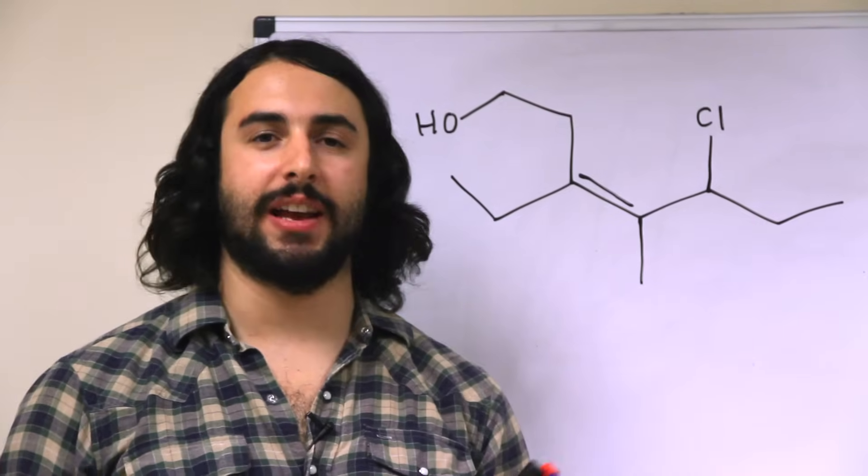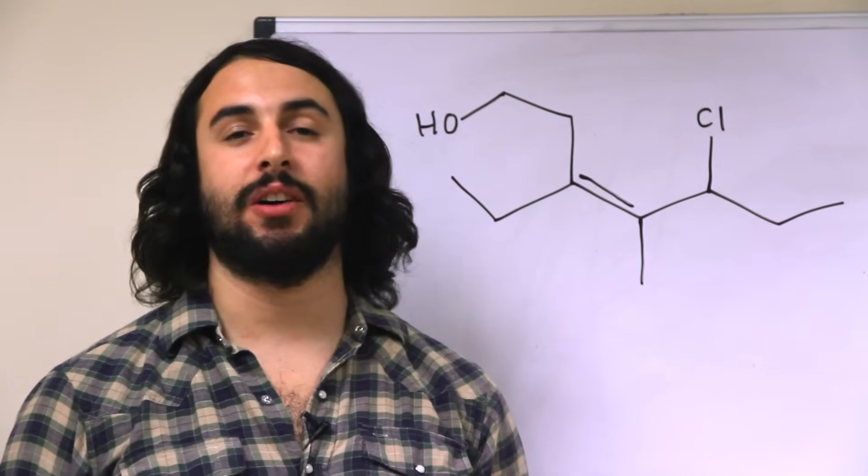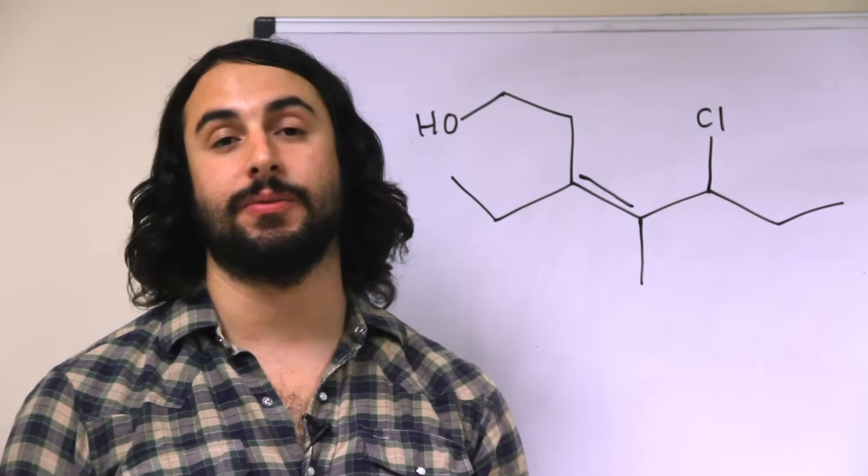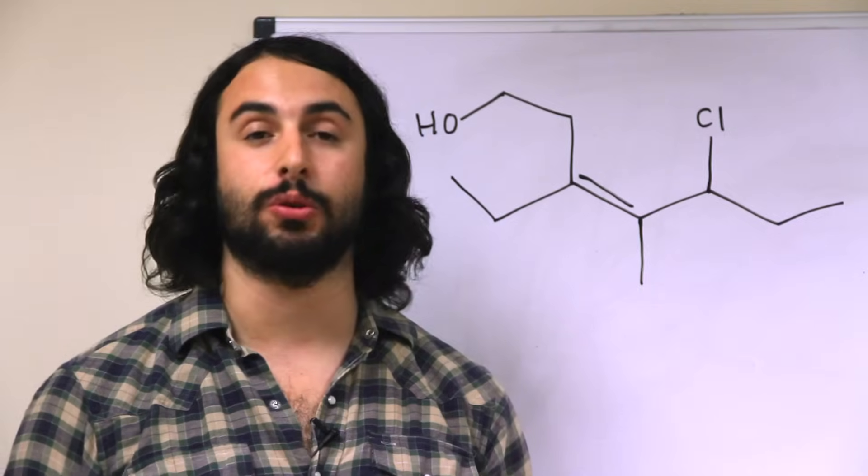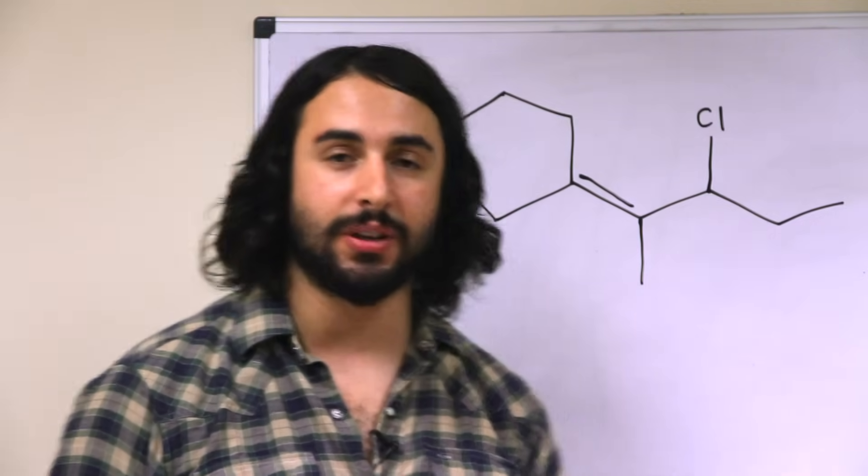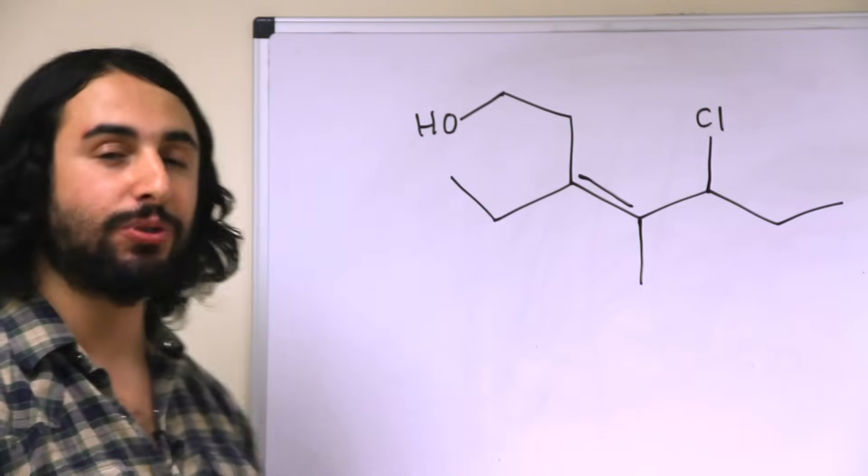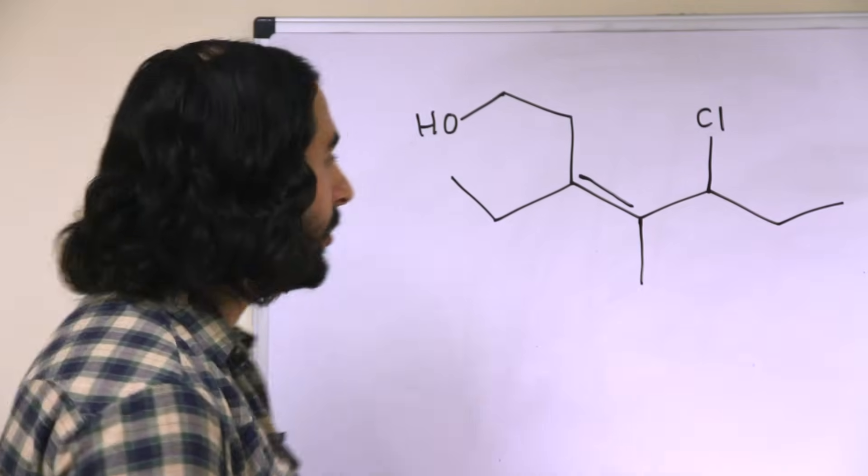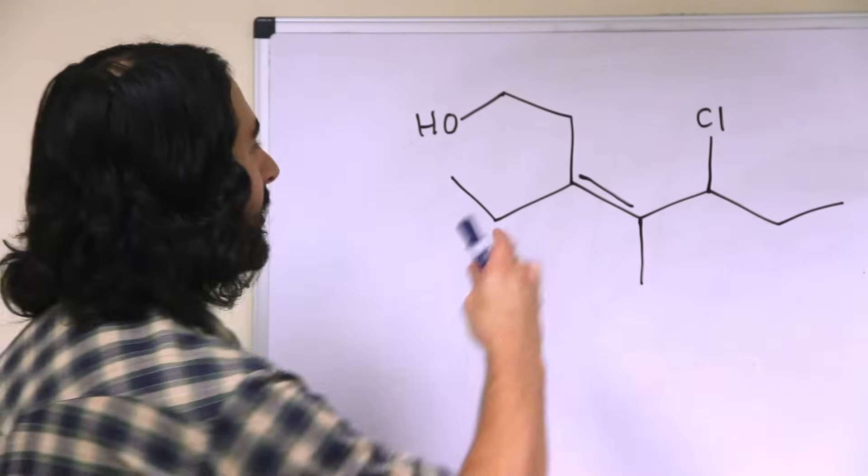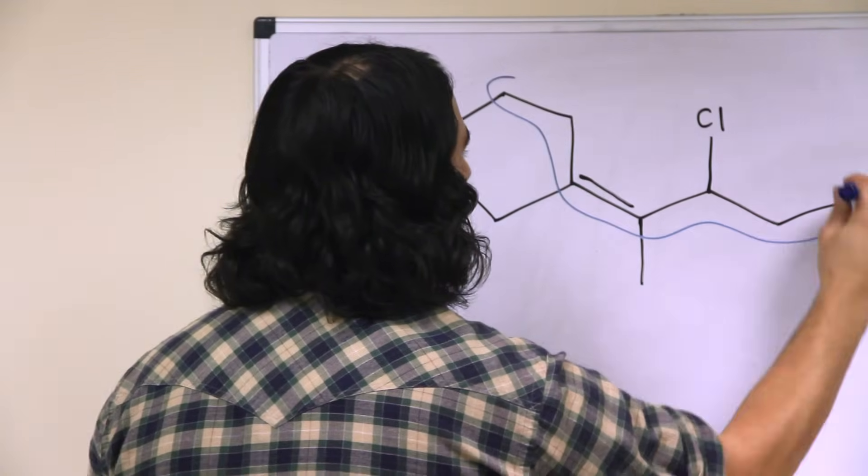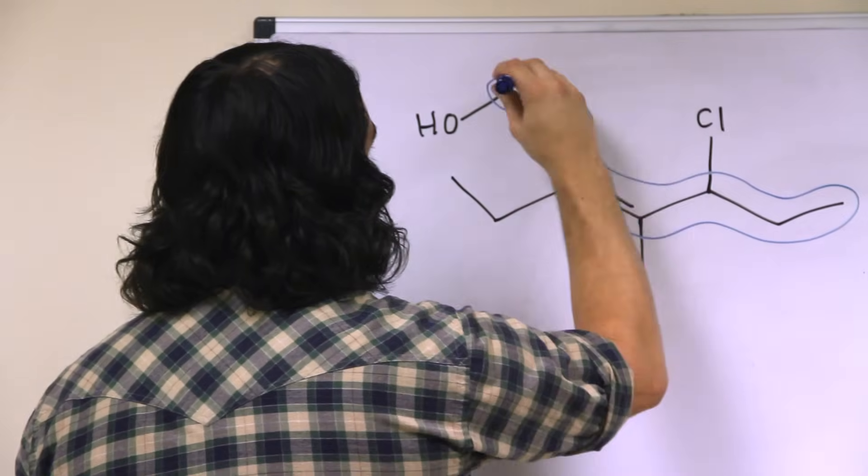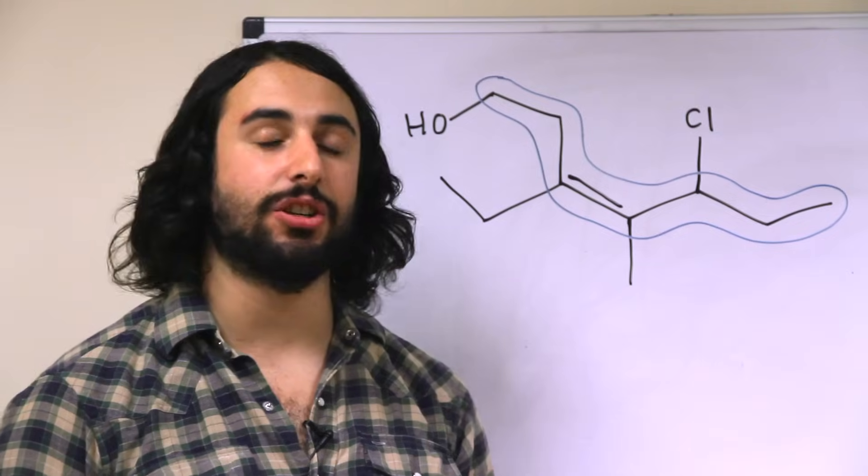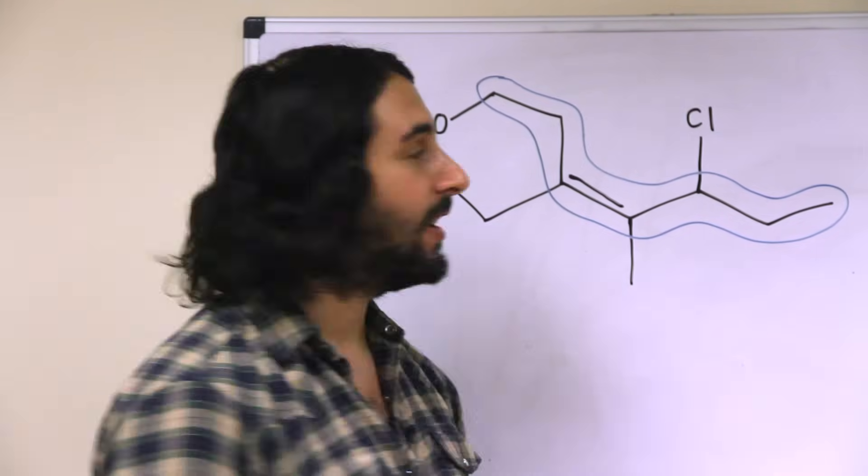So up until this point, we've been looking at some pretty simple examples, but in reality a lot of organic molecules have multiple different kinds of substituents and different functional groups on the molecule. So let's look at a slightly trickier example and see what happens when we have multiple different kinds of substituents on the molecule. So the first thing that we have to do, as always, is identify the longest carbon chain.